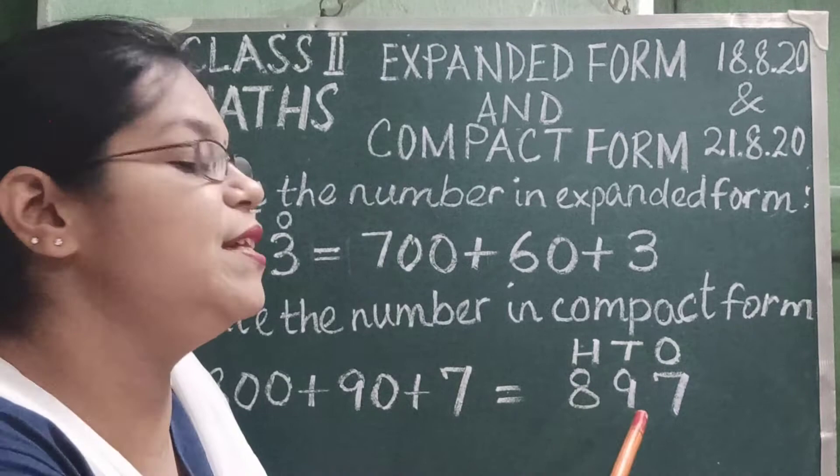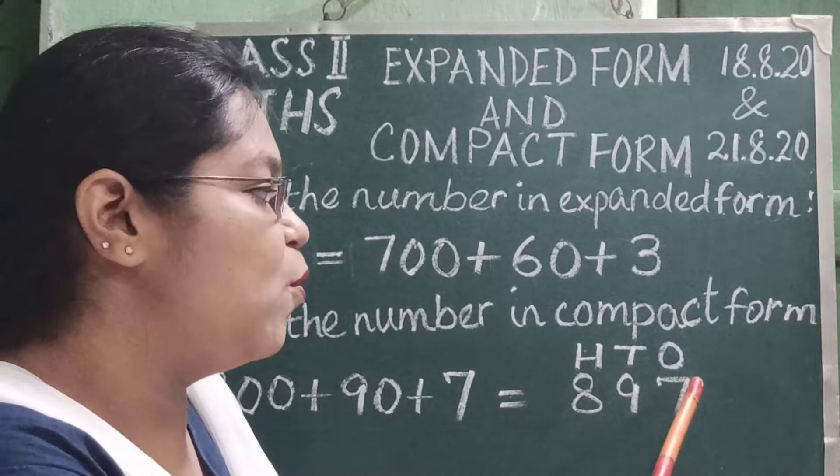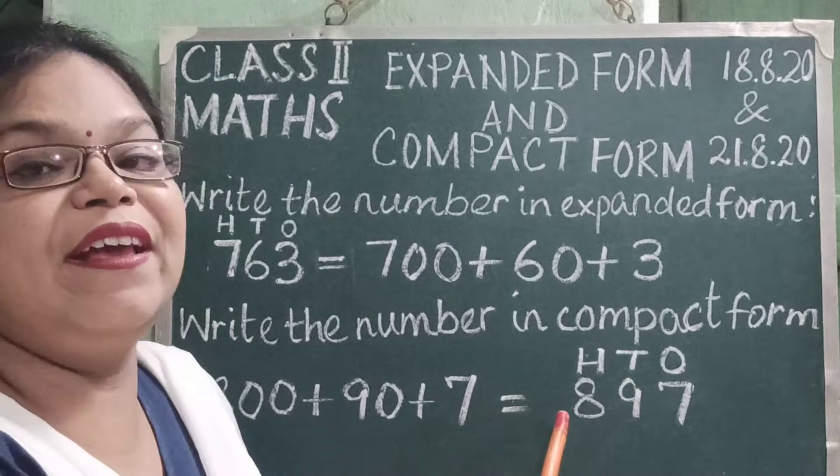And 7 has got no zero. In 1's place, we have no zero. So 7 we have written under 1's house. So children, 800 plus 90 plus 7 equals 897.